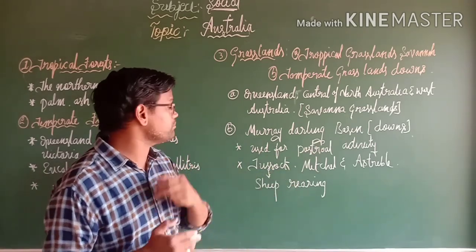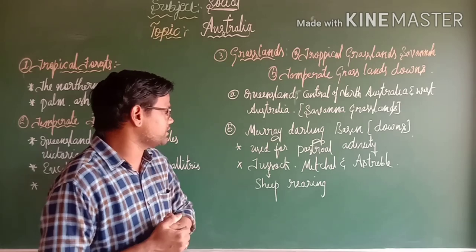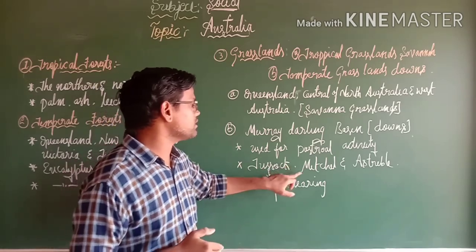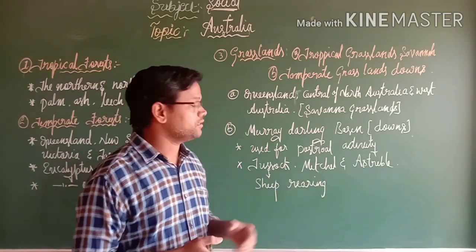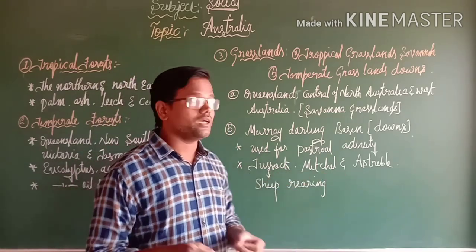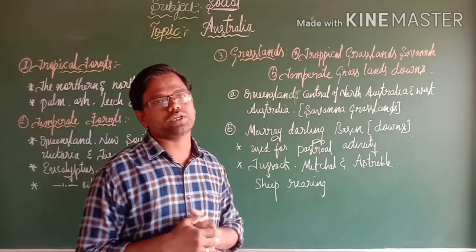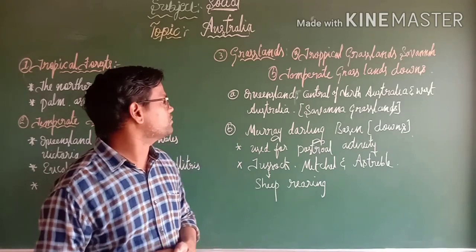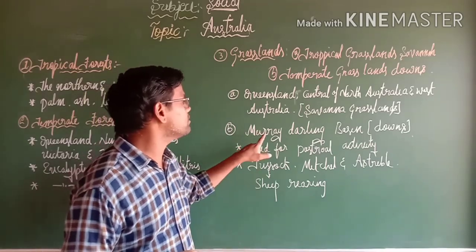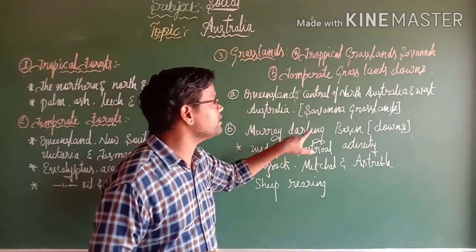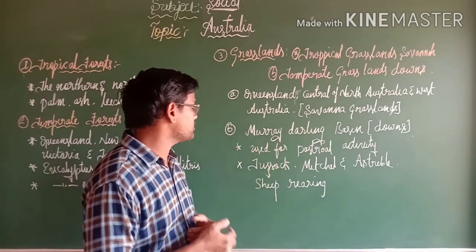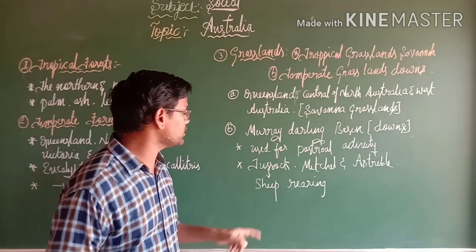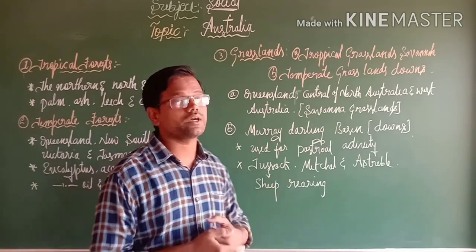In the Murray-Darling basin we can see three important basins: Tarsep, Mitchell, and Astribal. The Tarsep basin is very useful for sheep raising.